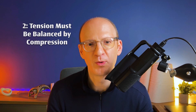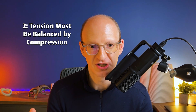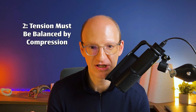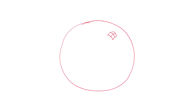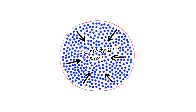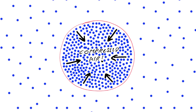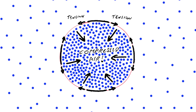The second reason is that whenever we have tension in a structure, somewhere there has to be compression to balance it out. Thank you, Isaac Newton, for observing and pointing this out to all of us. So where is the compression with a soap bubble? Well, it's the air inside the soap bubble that is compressed a little more than the air outside. So the equilibrium, the balance of forces, is tension in the soap bubble film and compression in the air it contains.